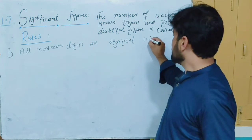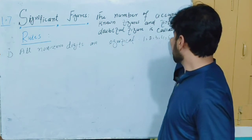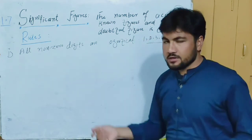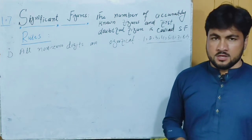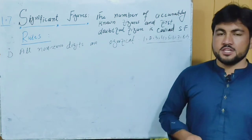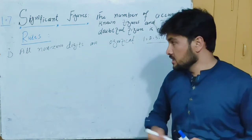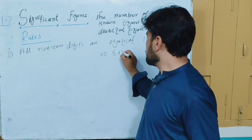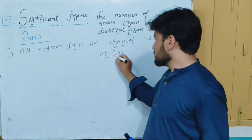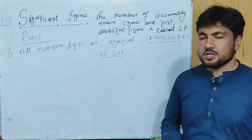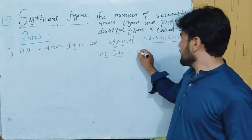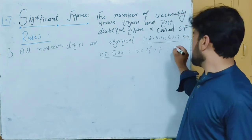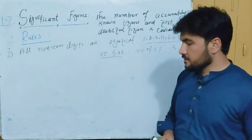For example, the digits 1, 2, 3, 4, 5, 6, 7, 8, 9 are all non-zero digits and they are all significant figures. Any number made up entirely of non-zero digits — all of those digits count as significant figures. So if a number has 5 non-zero digits, the number of significant figures is 5.